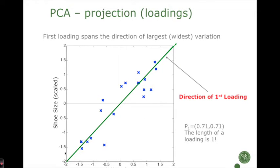When we have done this, we find the direction in data that describes the two variables the best — and that is this direction. We could put in another direction, but it would not describe the variables very well. We find the line where the distance from each point to the line is minimum. This direction in both height and shoe size gets a loading on both variables — 0.7 and 0.7.